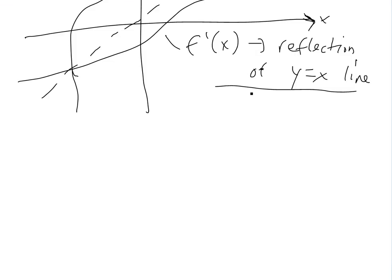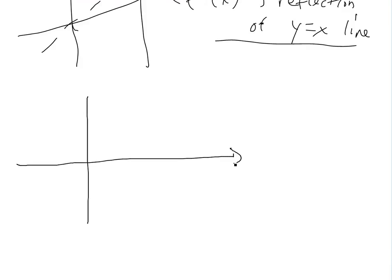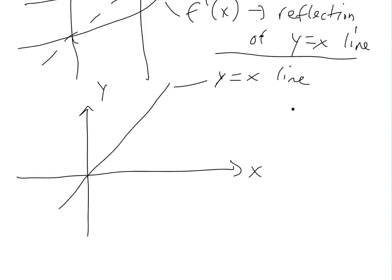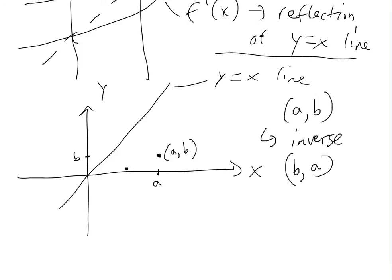Let's say we have a random point with coordinate (a, b). We'll mark a on the x-axis and b on the y-axis, so the point is (a, b). If we go to the inverse of it, we're just switching them — the inverse point would be (b, a). So we go to b on the x-axis and a on the y-axis, and as you can see, it is perfectly symmetric across y equals x. It's a perfect mirror image.